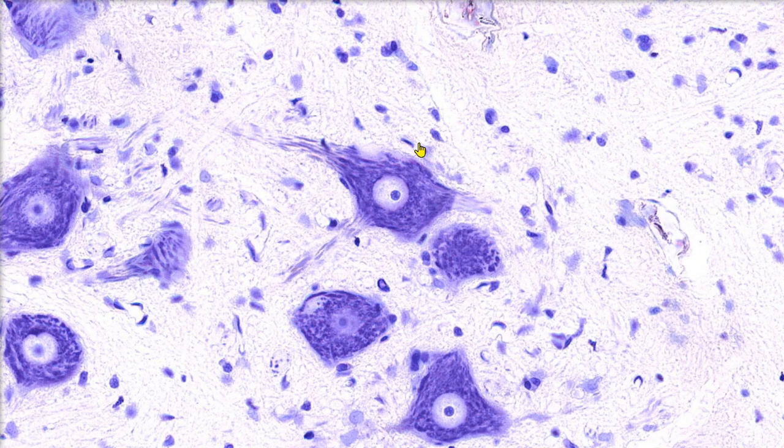All of these dark spots that are surrounding the neuron are glial cells. Glial cells are easy to identify because of their dark staining nucleus. We can't really see much of the rest of the cell.